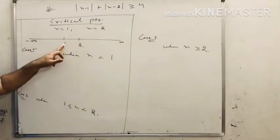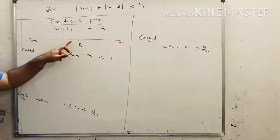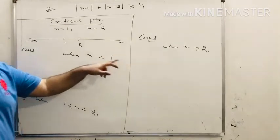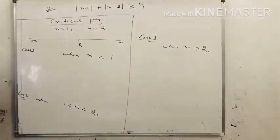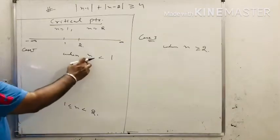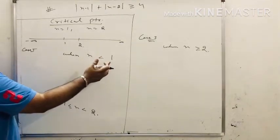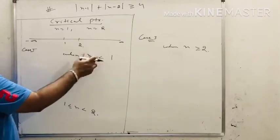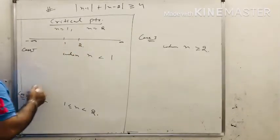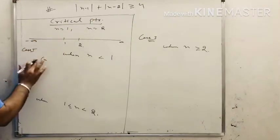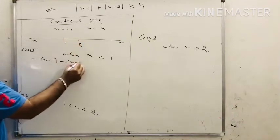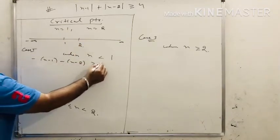Case 1: assume x is less than or equal to 1. If x is less than 1, it is also less than 2. So both modulus signs become negative. This gives minus x plus 1 plus minus x plus 2 greater than or equal to 4, so minus 2x plus 3 greater than or equal to 4.